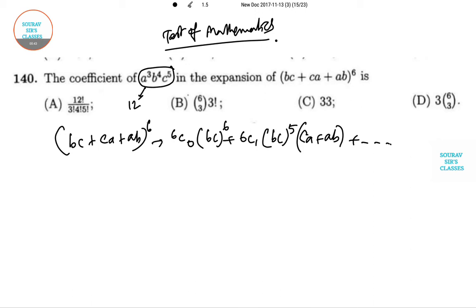So this power is 12. Here our target is to proceed something with 12 as well, so we need to write some more terms over here. So 6C2(ca + ab)² and 6C3 (bc + ca + ab)³.